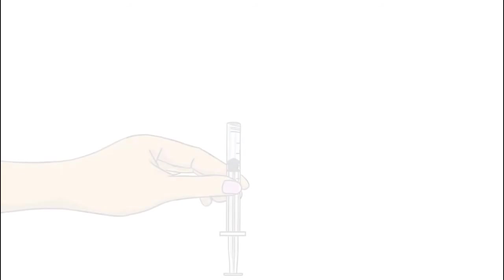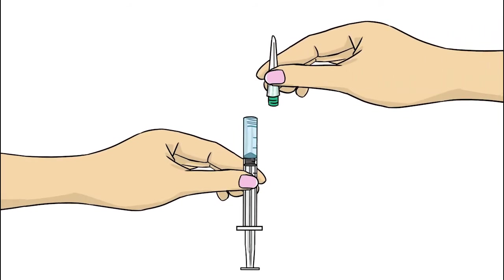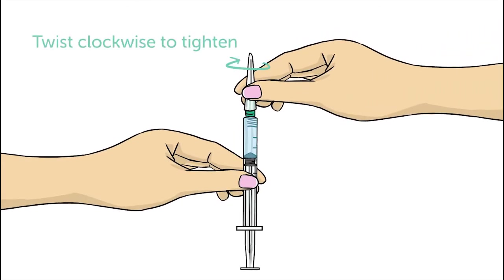Hold the syringe with the syringe tip pointing up. Twist the injection needle onto the syringe in a clockwise direction until it is tight.